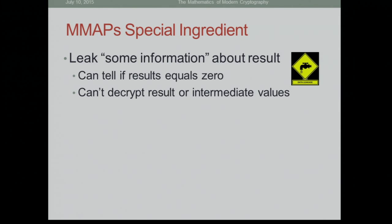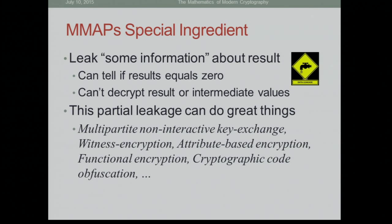The special ingredient that multilinear maps have is that it lets you leak some information about the result of a computation — in particular, it lets you test whether that result is equal to zero, without letting you decrypt it if it's not zero, and without letting you learn anything about the intermediate values.